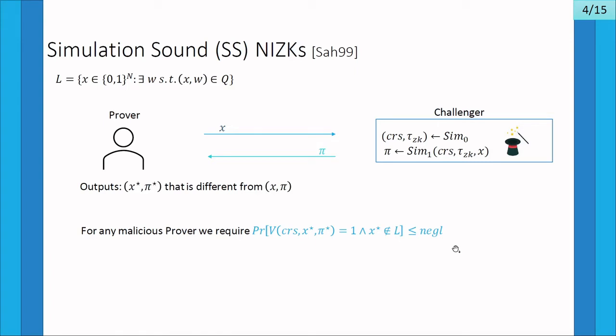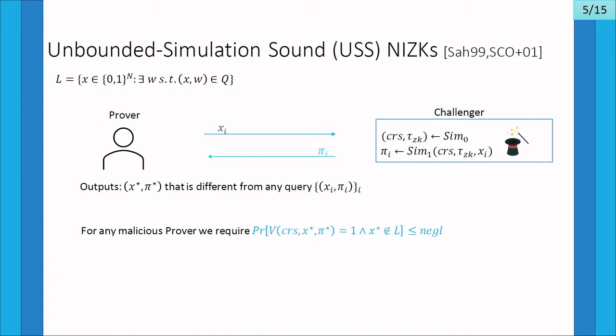In a simulation sound NIZK, no cheating prover should be able to produce a valid proof for a false statement despite having access to an oracle that simulates proofs. In the one-query setting, the prover is allowed to make only one oracle query of his choosing, to which the oracle replies with a simulated proof. Even with this extra information, the prover should not be able to produce any valid proofs on false statements. In the unbounded simulation setting, the prover is allowed to query the oracle polynomially many times.